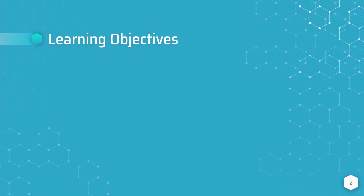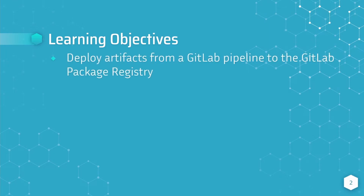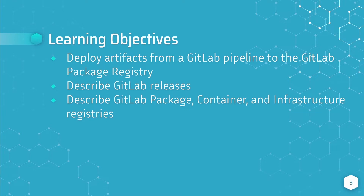Let's review our learning objectives for this module. After completing this module you should be able to do the following: deploy artifacts from a GitLab pipeline to the GitLab package registry; describe GitLab releases; and describe the GitLab package, container, and infrastructure registries.